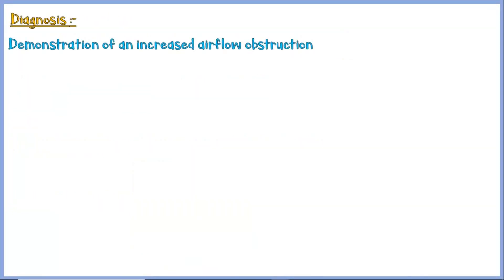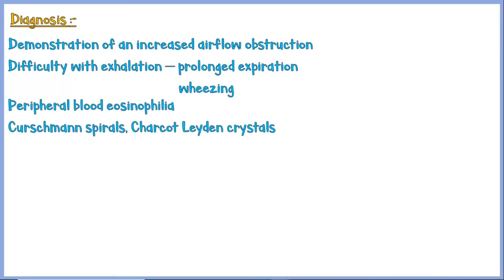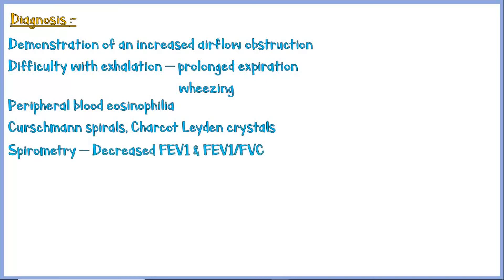Diagnosis is based on demonstration of airway obstruction with difficulty with exhalation, characterized by prolonged expiration and wheezing; peripheral blood eosinophilia; and eosinophil-derived substances like Curschmann spirals and Charcot-Leyden crystals in sputum. As asthma is an obstructive airway disease, on spirometry the forced expiratory volume during the first second (FEV1) and FEV1 to forced vital capacity ratio will be decreased.